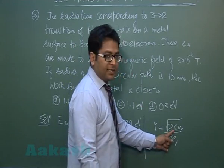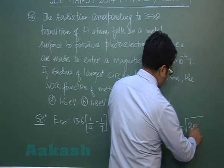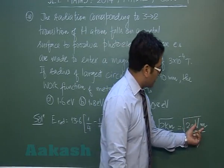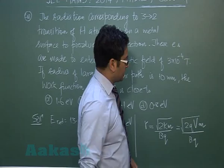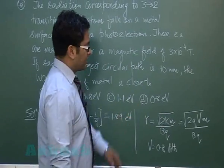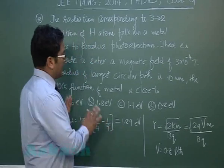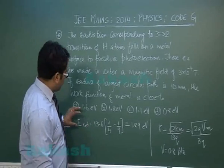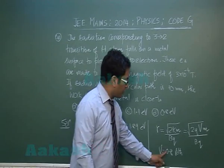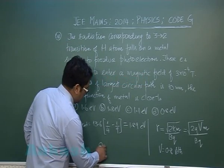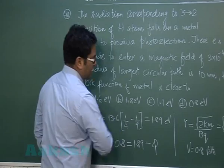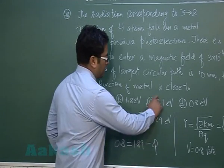To calculate kinetic energy, rewrite R as √(2QVM / BQ), assuming kinetic energy comes from acceleration through potential V. This gives a potential of 0.8 volts, so the maximum kinetic energy is 0.8 electron volts. Using the photoelectric equation — maximum KE equals incident energy minus work function — the work function φ comes out to be 1.1 electron volts.